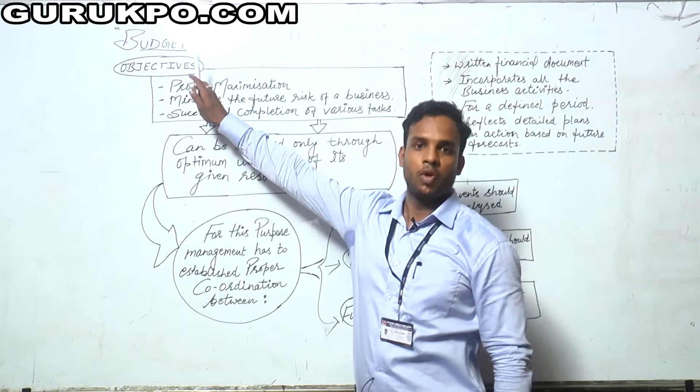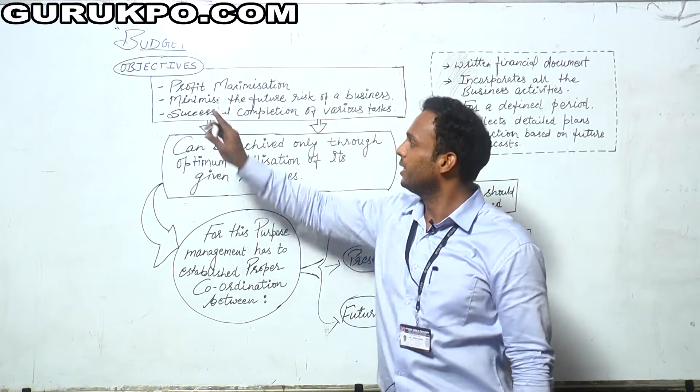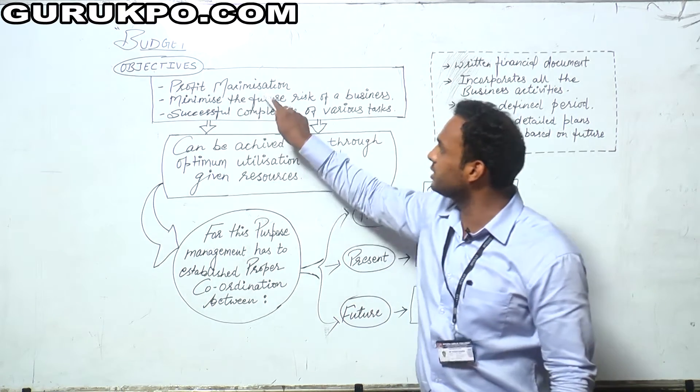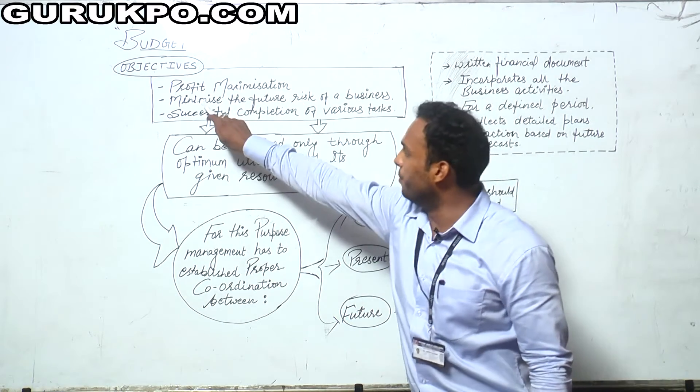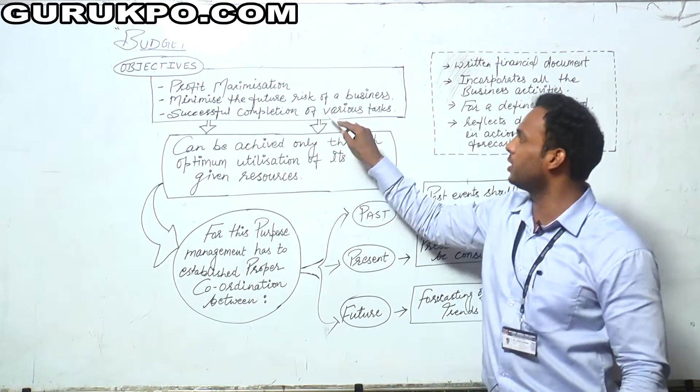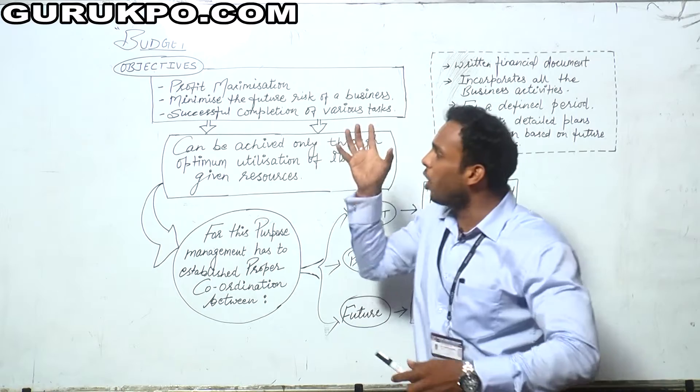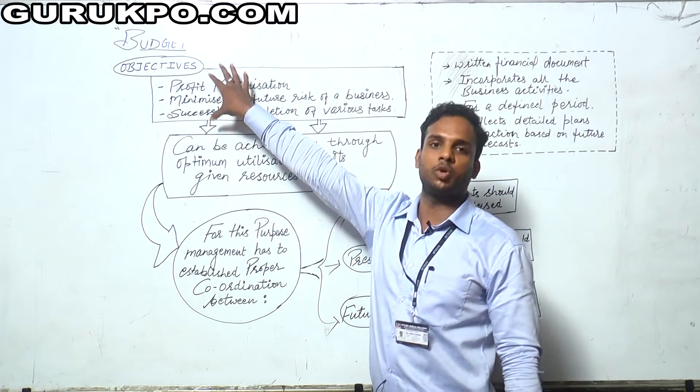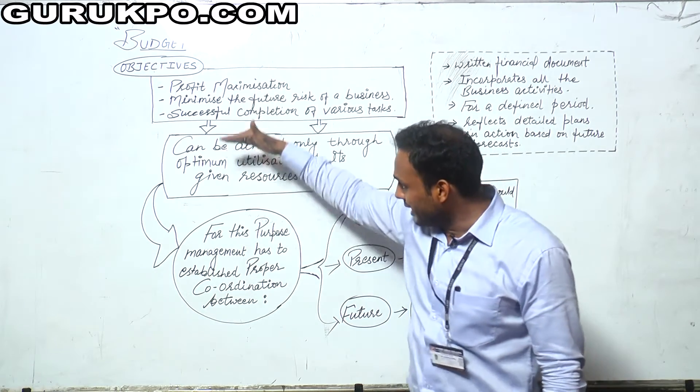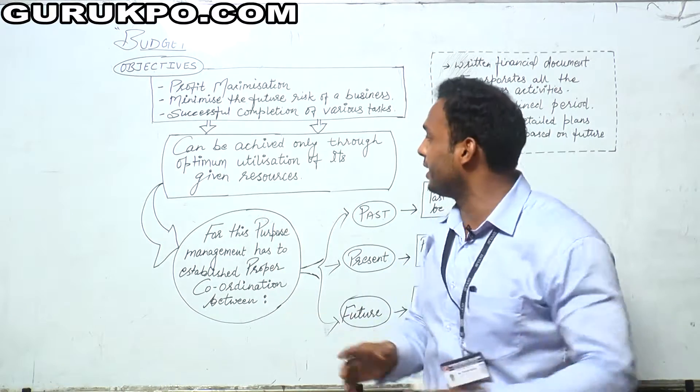First, what are the objectives of a business concern? The three most important objectives are profit maximization, minimizing the future risk of a business, and successful completion of various tasks. A business operates to complete these three objectives.